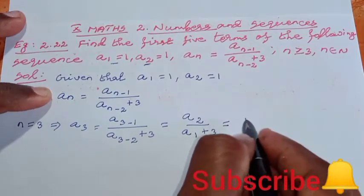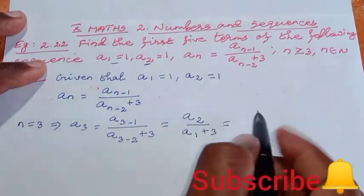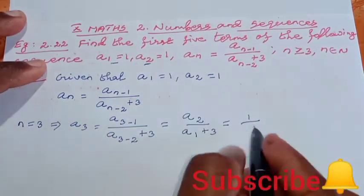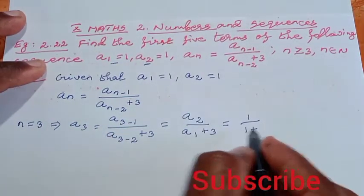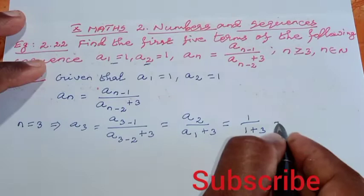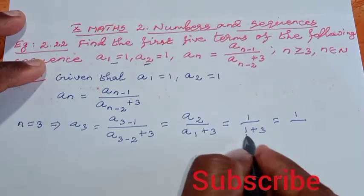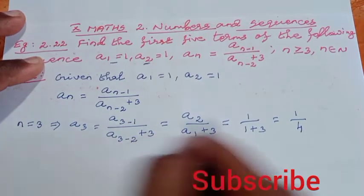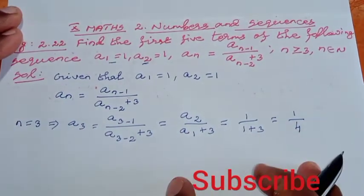This equals a₂, value 1, divided by a₁, value 1, plus 3, which equals 1/(1 + 3) = 1/4. So the third term is 1/4.